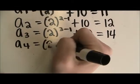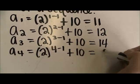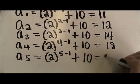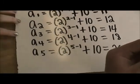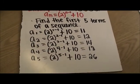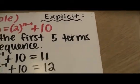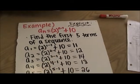For a sub 4, you put 4 in for n — 2 to the 4 minus 1 power plus 10 equals 8 plus 10 equals 18. And that is an example of explicit, which is another way of finding a sequence. Recursive relies on the previous term, and explicit depends only on the number of the term.